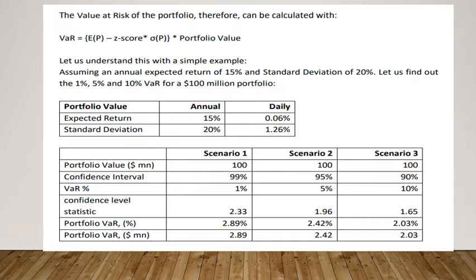As you can see here, we have a clear-cut example. There is a formula given for calculating VaR — I'm just highlighting the formula now. In this formula we have to work on three variables. The first variable is the return of the portfolio. This sheet very clearly says we have to work on two variables to arrive at VaR: one is the expected return and the second is the standard deviation.